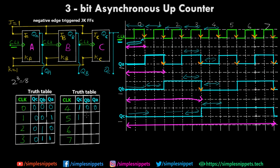Similarly you get the outputs 101, 110, and in the last cycle — the seventh — you see QA is high, QB is high, and QC is also high. Looking at the truth table, these digital values represent their decimal numbers: 000 is 0, 001 is decimal 1, 010 is decimal 2, 011 is decimal 3, then 4, 5, 6, and 7.